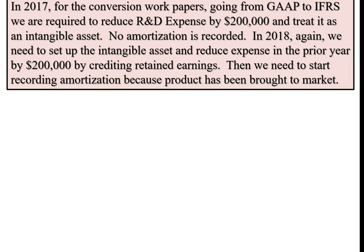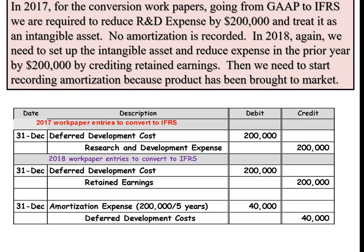In 2018, we need to set up the intangible asset and reduce expense in the prior year by $200,000 by crediting retained earnings. Then we need to start recording amortization because the product has been brought to market. Here are the working paper entries: for 2017, we set up the intangible asset and reduced expenses going to the International Standard. For 2018, we set up our intangible asset with the adjustment going to retained earnings since it was expensed in the prior year, and then we record actual amortization of $40,000 and reduce our intangible asset by that amount.